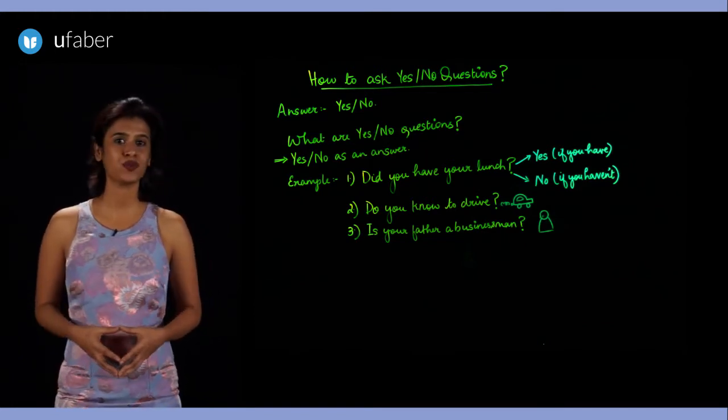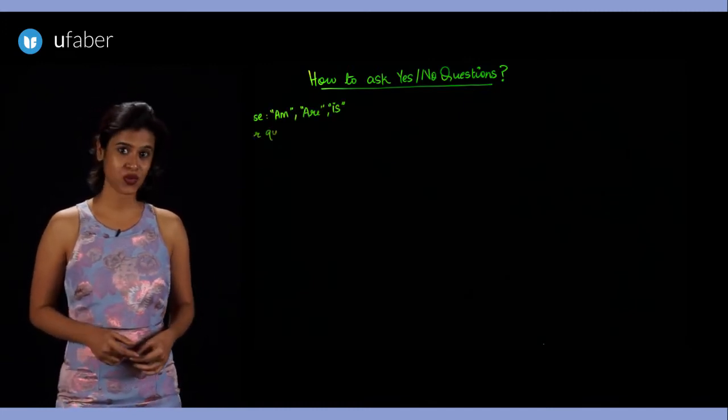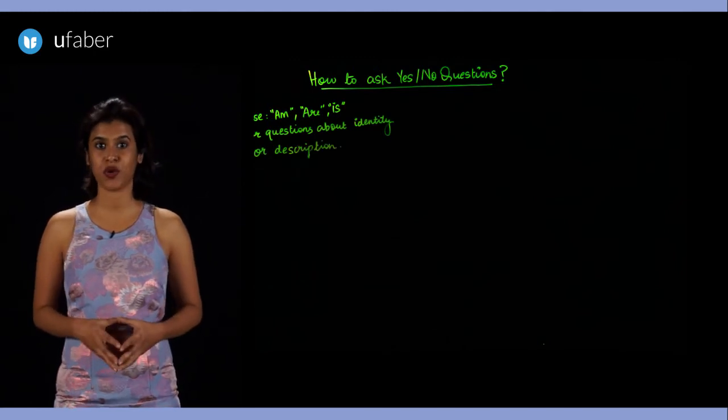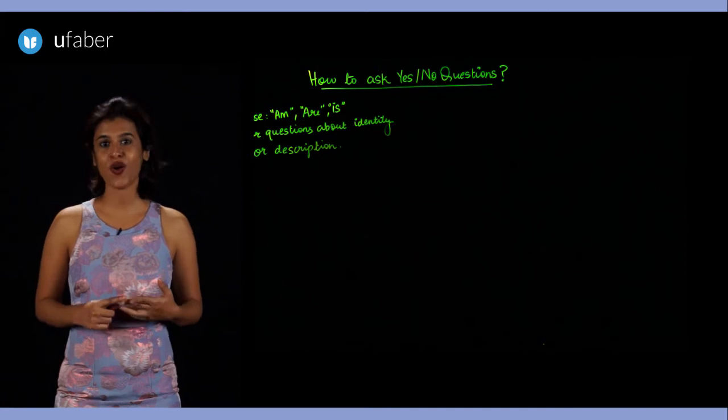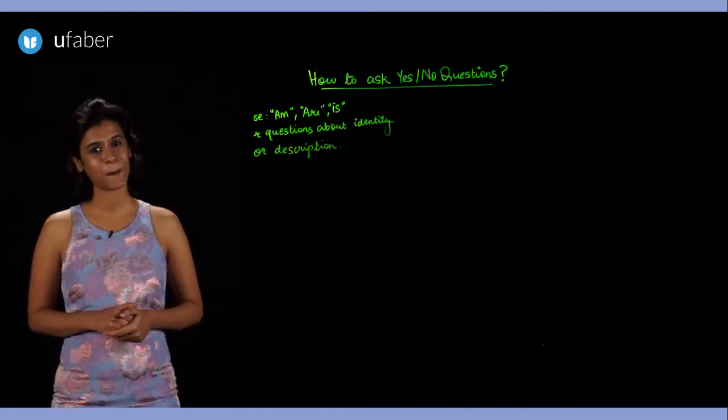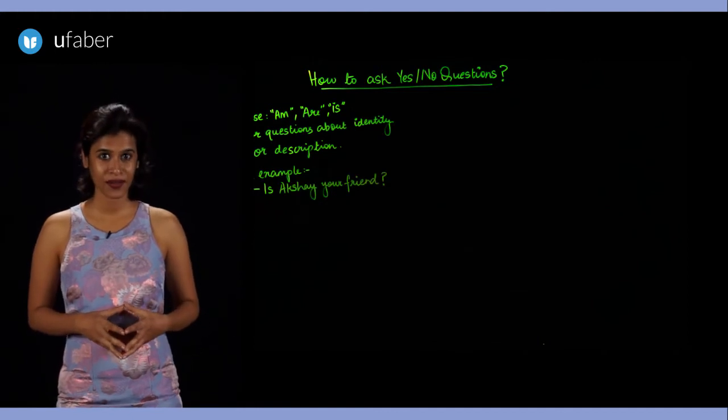...that we have to use words like am, are, and is to ask yes or no questions about the identity or description of a person, a place, or even a thing. For example: Is Akshay your friend? Am I a good teacher? Is that a blue ink pen?